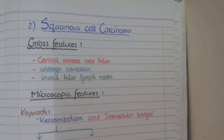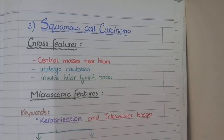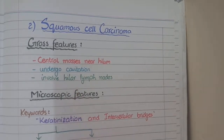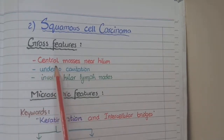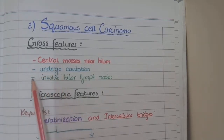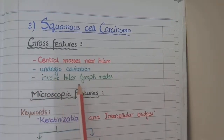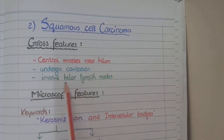Being central, squamous cell carcinomas also rapidly involve the hilar lymph nodes that are present near the hilum of the lungs. So overall on gross specimen of squamous cell carcinoma, you see central masses near the hilum, these masses can undergo cavitation, and the hilar lymph nodes are also involved.